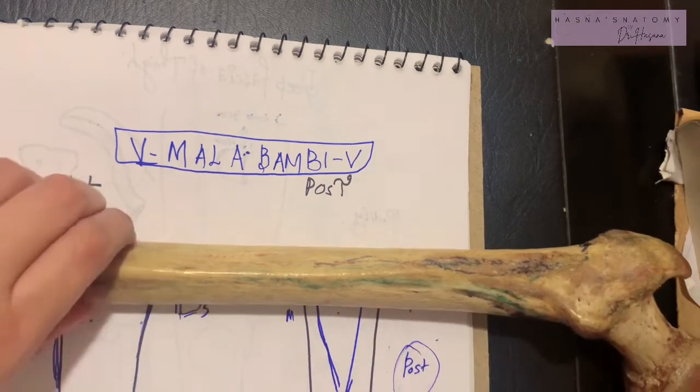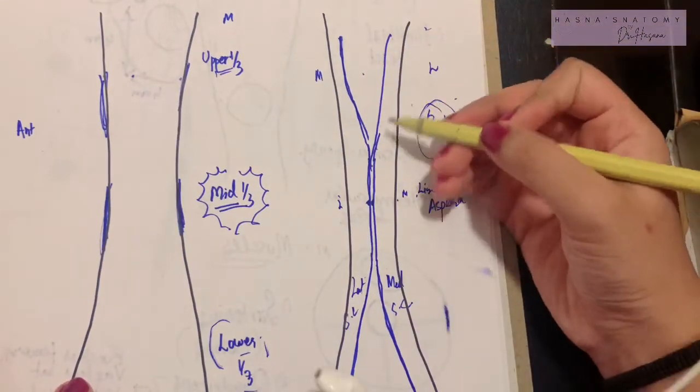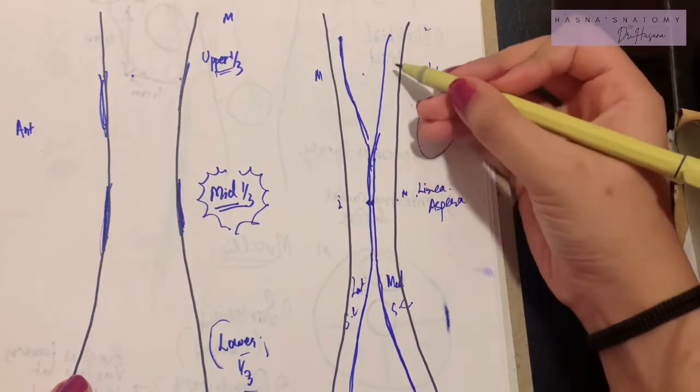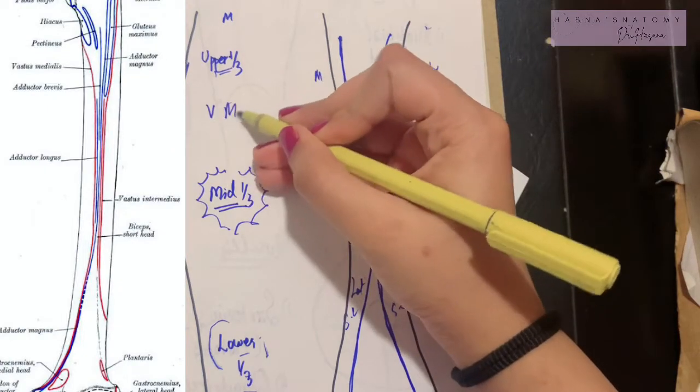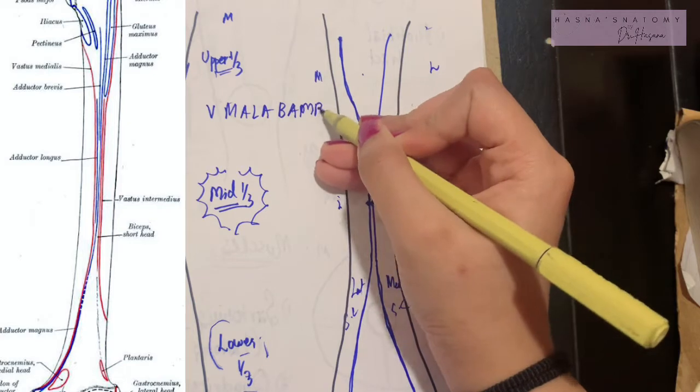So guys, let's go through this one more time. In the posterior part, we have the first muscle which is VM. So once again, let me write it here: V mala Bambi V.